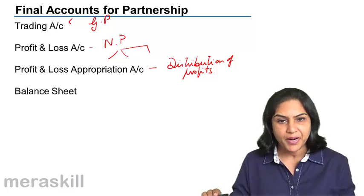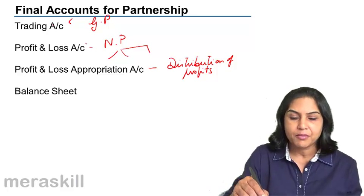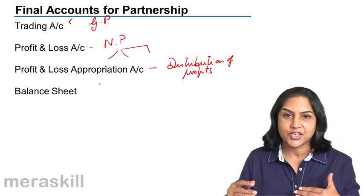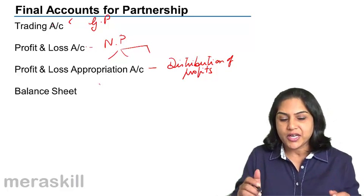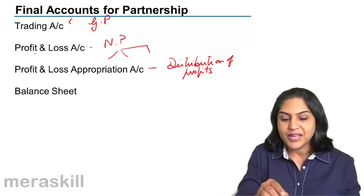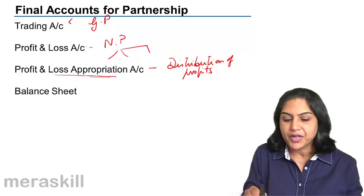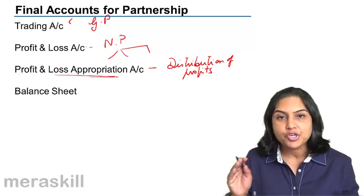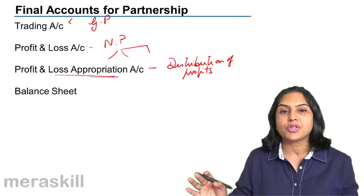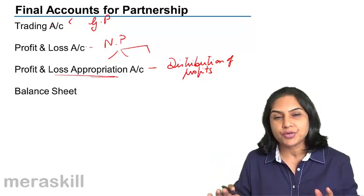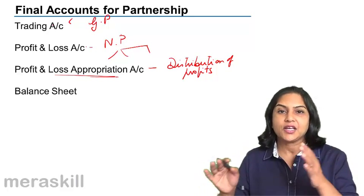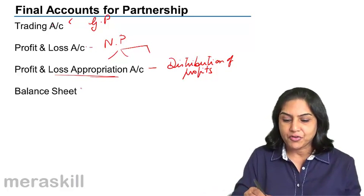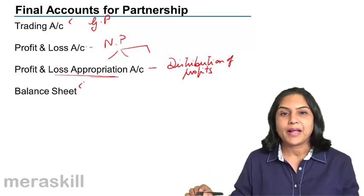And then we form the balance sheet. So, final accounts of a partnership include a trading account, profit and loss account, and the last section — the lowermost section of the income statement — is the profit and loss appropriation account, showing how the net profit earned is distributed to the different partners. And then, of course, the balance sheet.